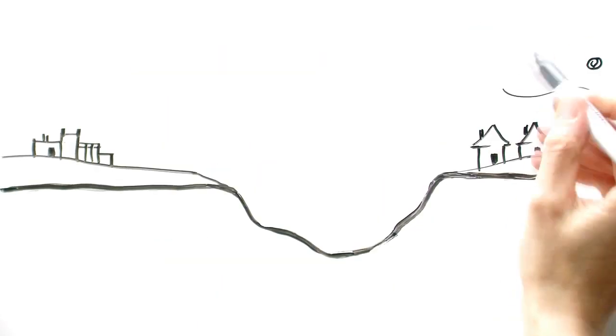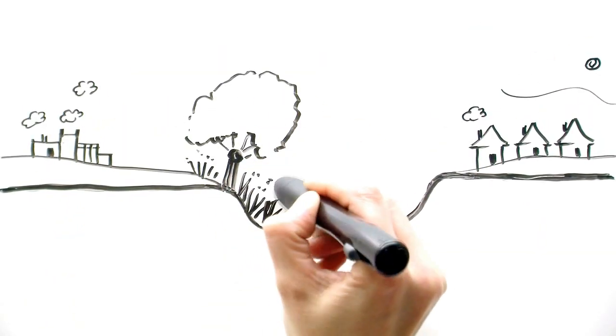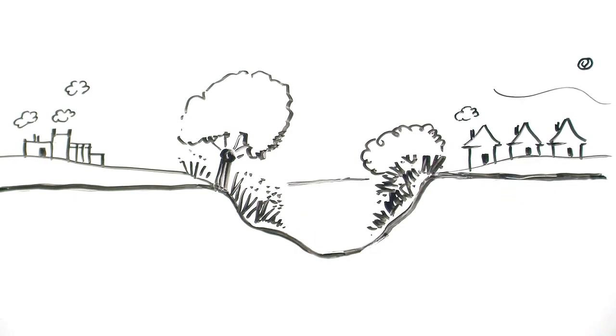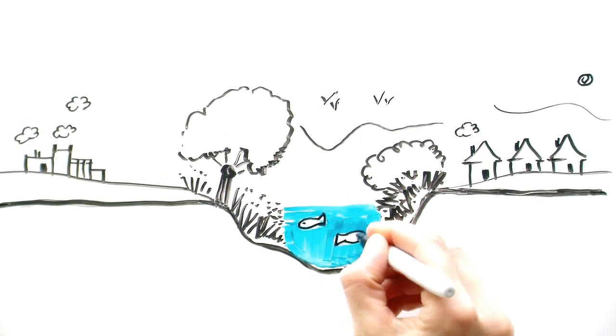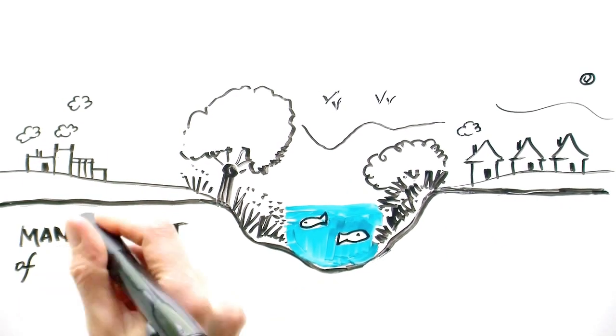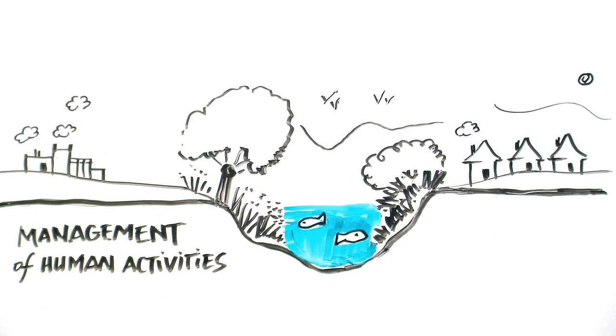If human activities are not well managed or if an incident occurs, groundwater can be polluted. Communities that depend on groundwater as a source of drinking water or depend on the plants and animals that live in aquatic areas may be affected by such changes to the groundwater.